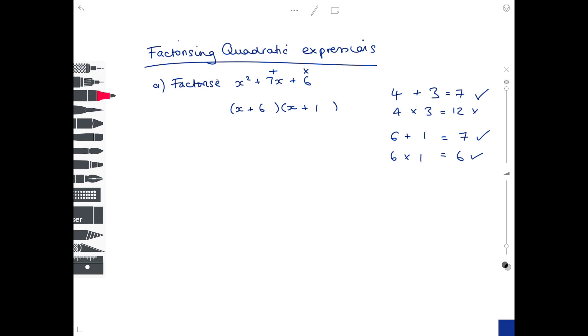Remember you can use the FOIL method in order to work out if your answer is correct. I'm just going to change colours to show this. FOIL is your method used for expanding brackets, which stands for first, outside, inside, and last.